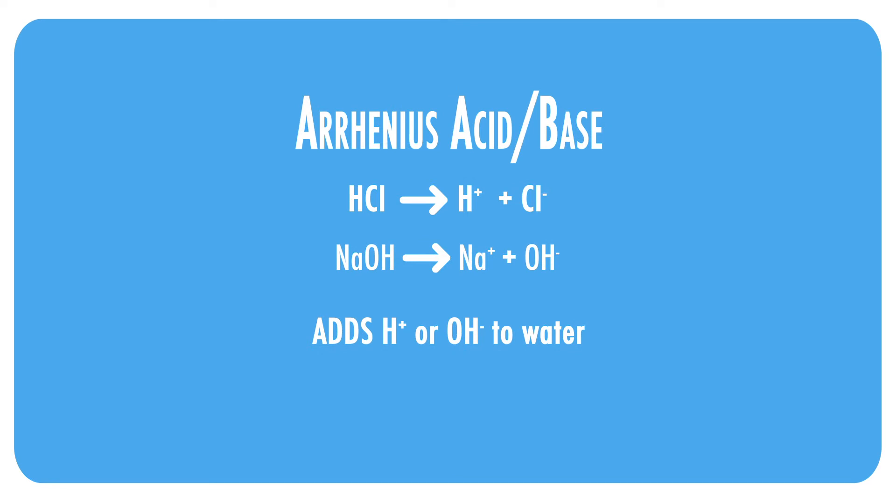So let's talk about the three types of acid and bases that you can have. Firstly, you have the Arrhenius acid and base. The main principle of this type of acid and base is that the acid adds hydrogen plus ions to water and the base adds OH minus ions to water. A great example of this is hydrochloric acid, which dissociates fully to form H plus ions and chloride minus ions. A great example of an Arrhenius base is sodium hydroxide, which dissociates fully as well to form sodium plus ions and hydroxide minus ions.